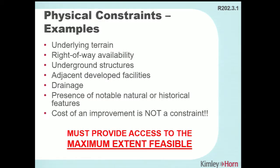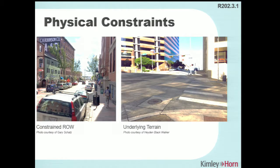If cost is tied back to a physical constraint, there may be justification for not fully removing that constraint. Constrained right-of-way examples: the photo on the left shows buildings backed up to the sidewalk serving the public right-of-way — we're obviously not tearing down buildings to install a curb ramp — but we do need to get as accessible as possible within those constraints.